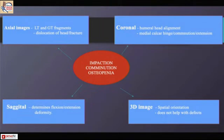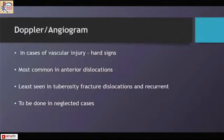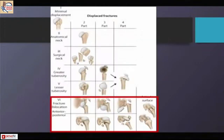On CT scan I look at the size of the tuberosities and their combination. Next, I look at glenoid fractures — especially in neglected varieties we need to understand glenoid defects. The third thing is fractures of the humeral head. I always go for a Doppler study, especially in three-part or four-part fracture dislocations, and whenever in doubt I get a CT angiogram done.